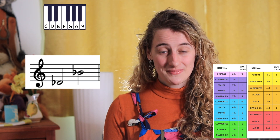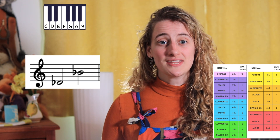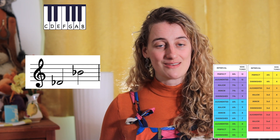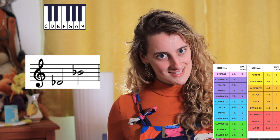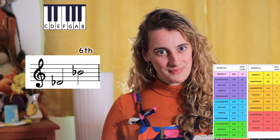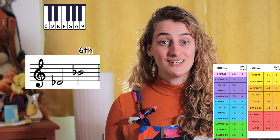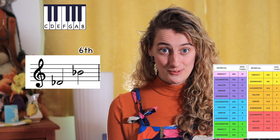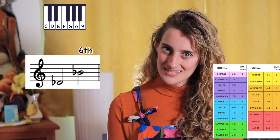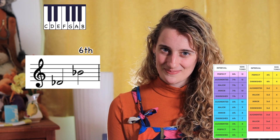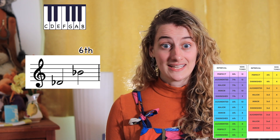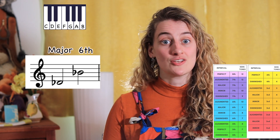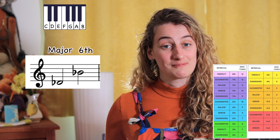Let's do some more examples. Take this interval — let's count the gap between the notes on the stave. It's a sixth. Now let's take the notes on the piano keyboard and count the semitones: nine semitones, which means it's a major sixth.